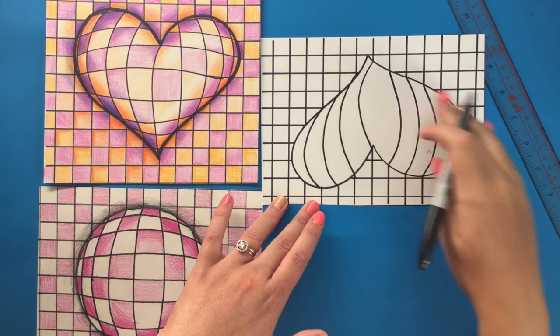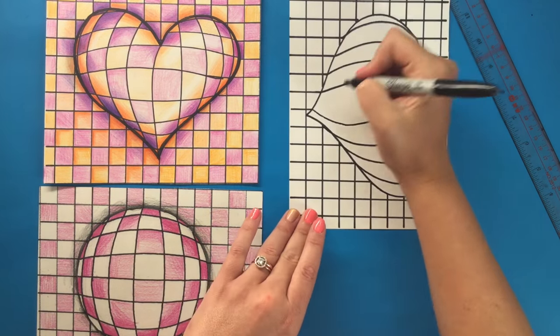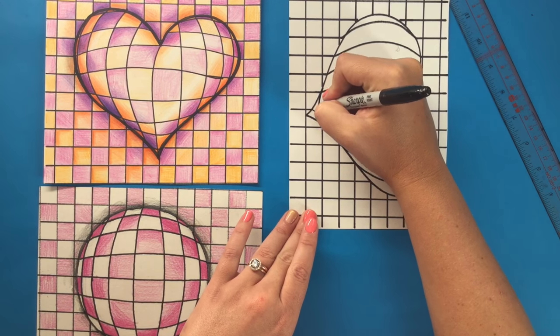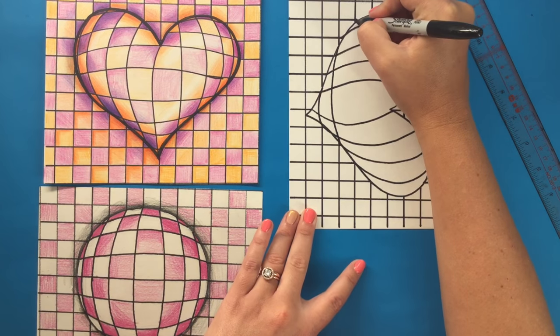Once I have completed the lines going in this direction, I should turn my paper and go ahead and complete the lines for the horizontal of my shape.